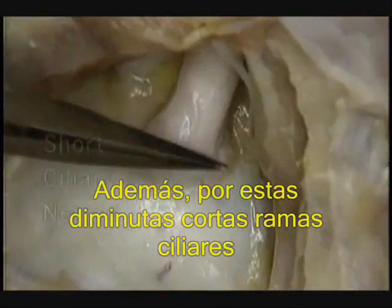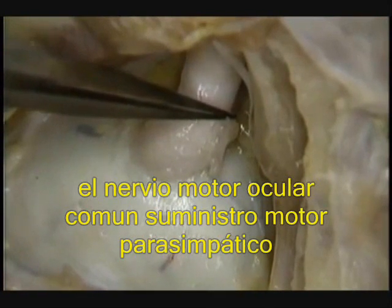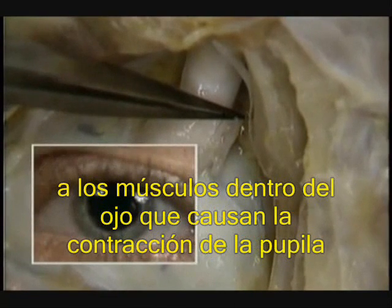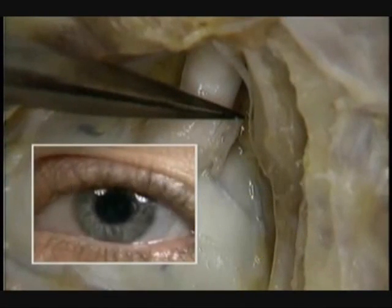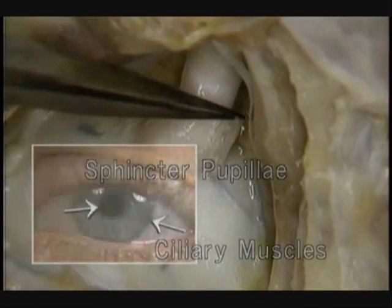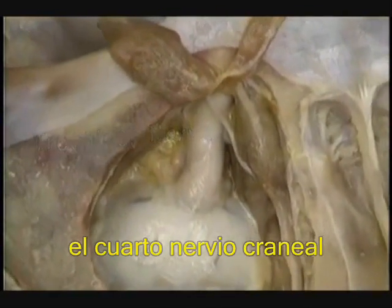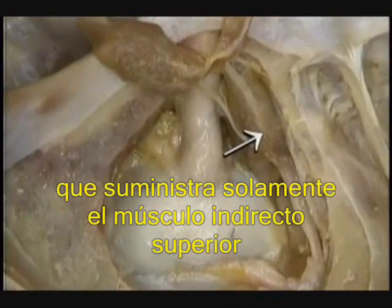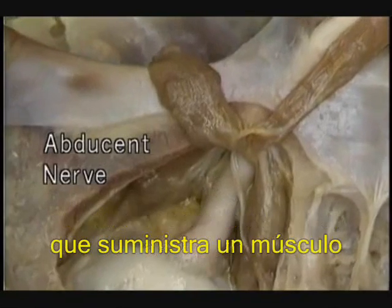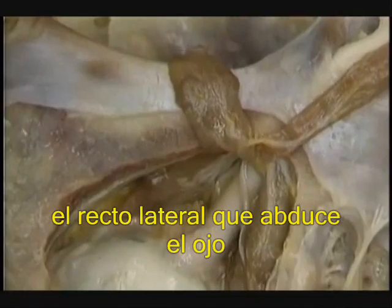In addition, by tiny short ciliary branches, the oculomotor nerve gives parasympathetic motor supply to muscles within the eye that cause constriction of the pupil — the sphincter pupillae and ciliary muscles. Here's the trochlear nerve, the fourth cranial nerve, which supplies just the superior oblique muscle. And here's the abducent nerve, the sixth, supplying its one muscle, the lateral rectus, which abducts the eye.